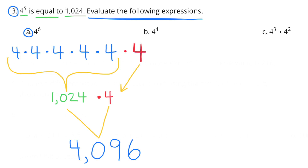Problem 3: 4 to the fifth power equals 1024. Evaluate the following expressions. A: 4 to the sixth power — if 4 to the fifth power equals 1024, then 4 to the sixth power would be 1024 times 4, which equals 4096.